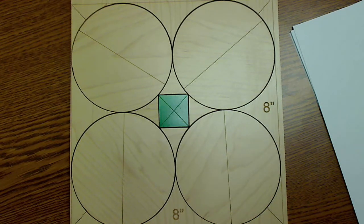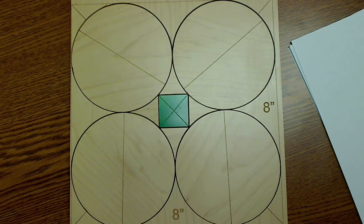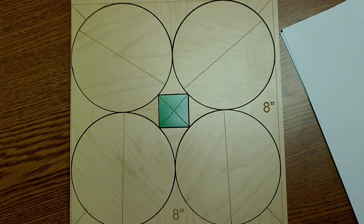All right, here's the problem of the week. The question is, with the square eight inches by eight inches and the four circles inside of it, what's the area of that green square in between the two circles?